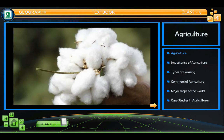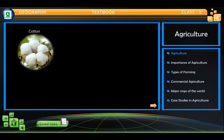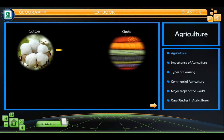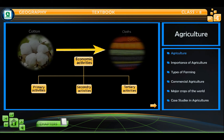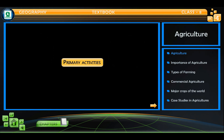The transformation from a plant — for example, cotton — to a finished product, that is, cloth, involves three types of economic activities: primary, secondary, and tertiary.